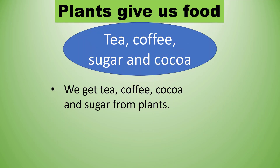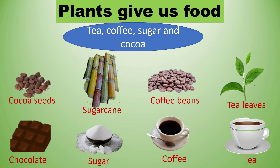Next we will discuss about tea, coffee, sugar, and cocoa. We get tea, coffee, sugar, and cocoa from plants. We can see some pictures of cocoa seeds. Cocoa seed is used to make chocolate. Sugar cane is used to make sugar and jaggery. Coffee beans are used to make coffee. Tea leaves are used to make tea.